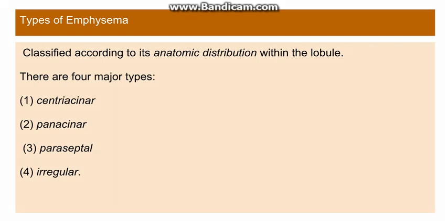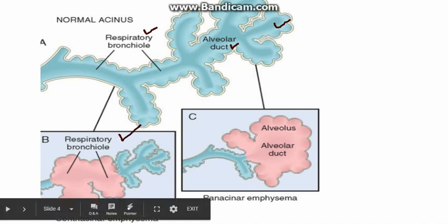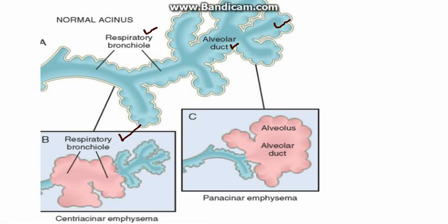The types of emphysema are divided according to the anatomic distribution within the lobule and the acinus. There are four major types: centriacinar, panacinar, paraseptal, and irregular. The normal acinus is distal to the terminal bronchiole and comprises the respiratory bronchiole, alveolar duct, and alveolar sac. In centriacinar emphysema, the most common type, only the respiratory bronchiole or proximal part is involved, and the distal part is spared.